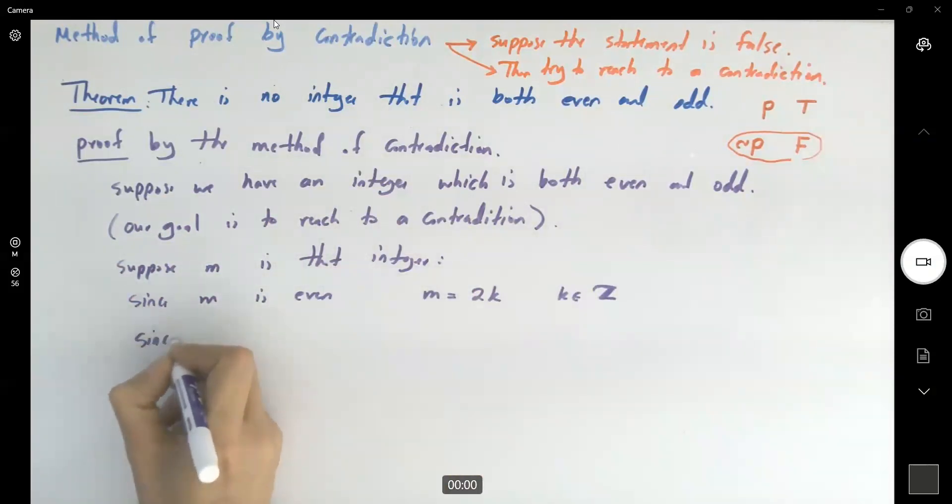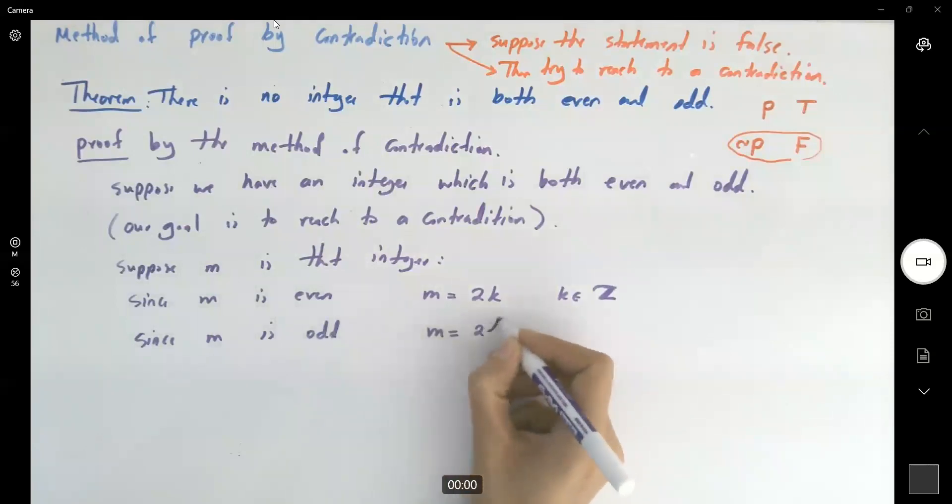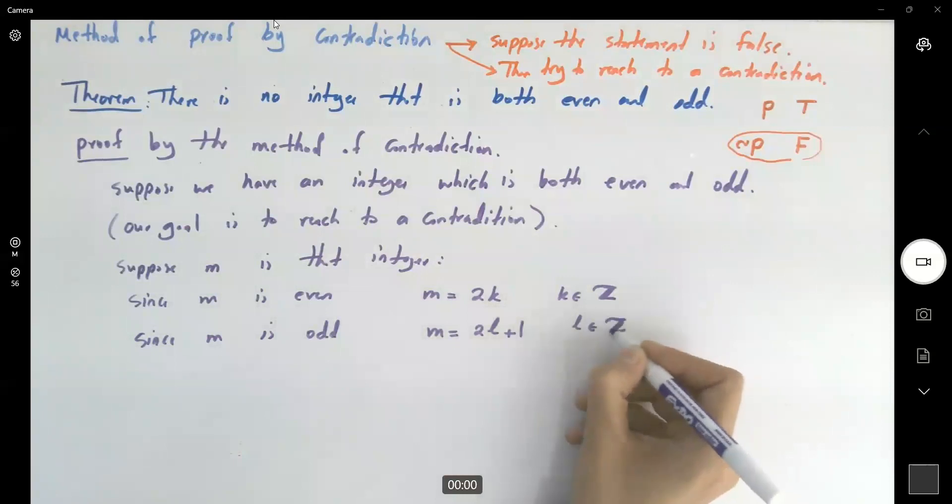Since M is odd, M can be written as 2L plus 1, L is an integer. Well, let's see.